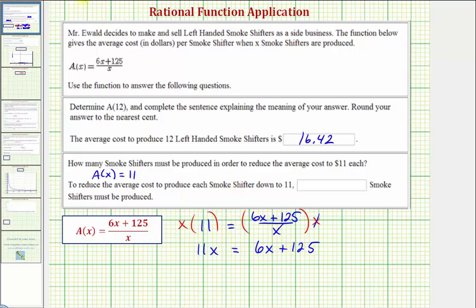So we'd subtract 6x on both sides to solve for x. We have 5x equals, this would be zero, so 5x equals 125, and dividing both sides by 5. We get x equals 125 divided by 5, which equals 25.